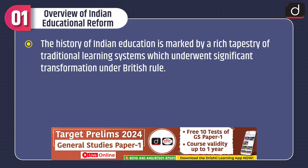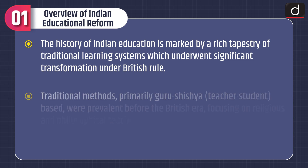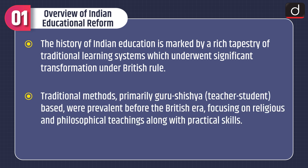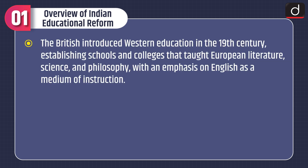Moving on to the overview of Indian Educational Reform. The history of Indian education is marked by a rich tapestry of traditional learning systems which underwent significant transformation under British rule. Traditional methods, primarily Guru Sishya — teacher-student based — were prevalent before the British era, focusing on religious and philosophical teachings along with practical skills. The British introduced Western education in the 19th century, establishing schools and colleges that taught European literature, science and philosophy, with an emphasis on English as a medium of instruction.